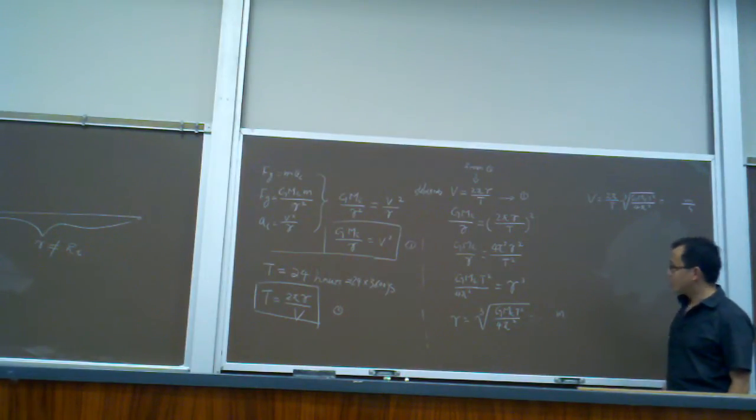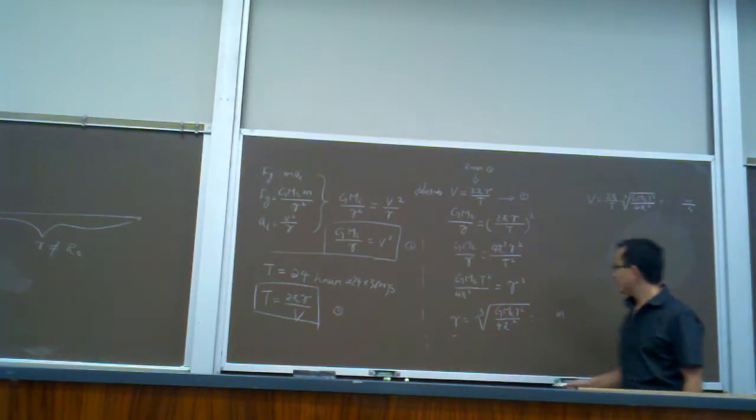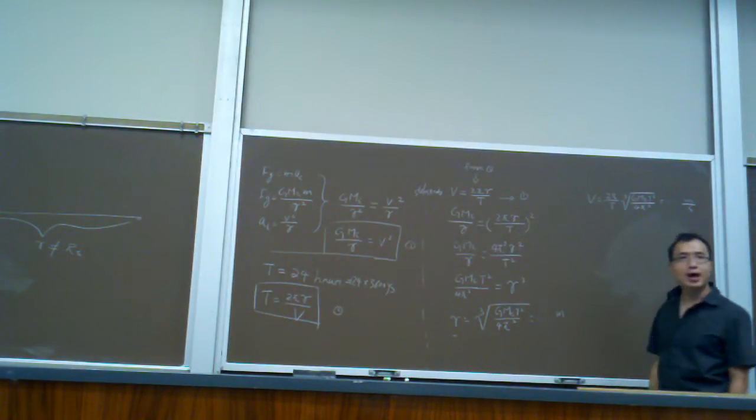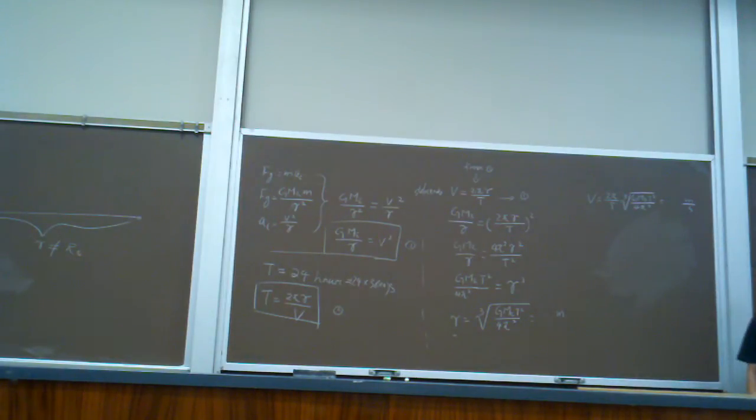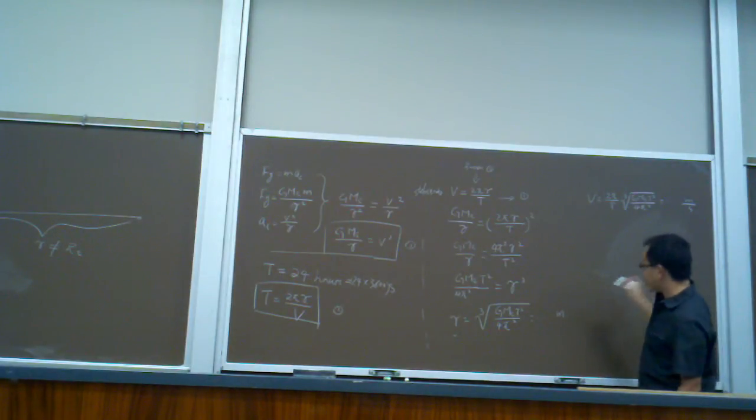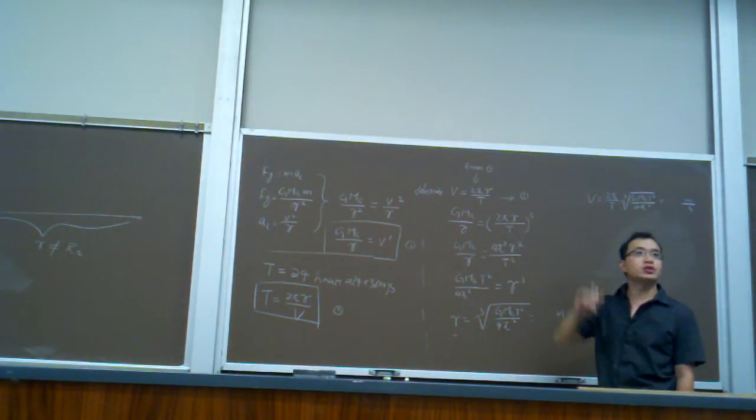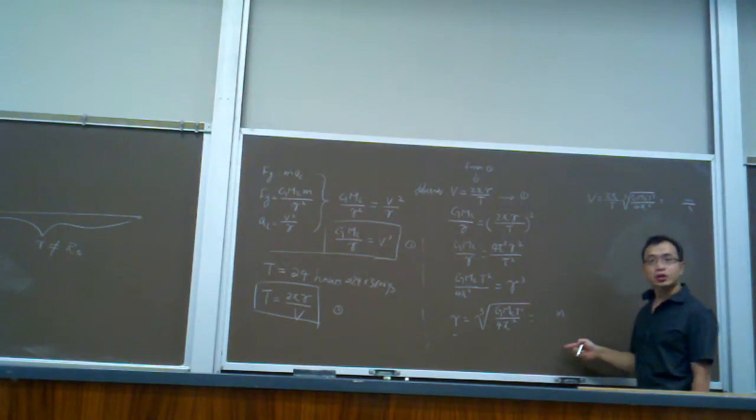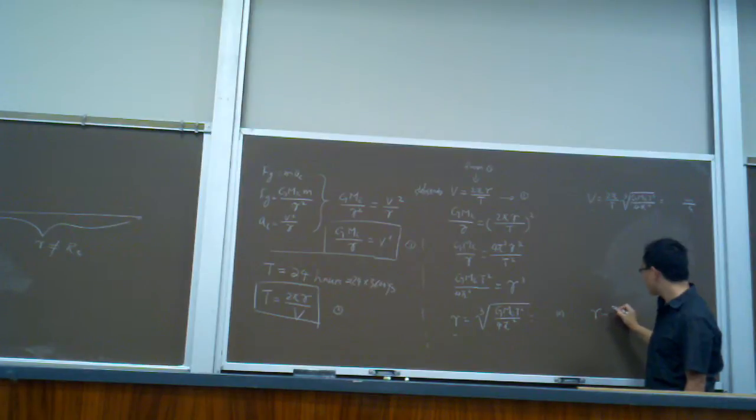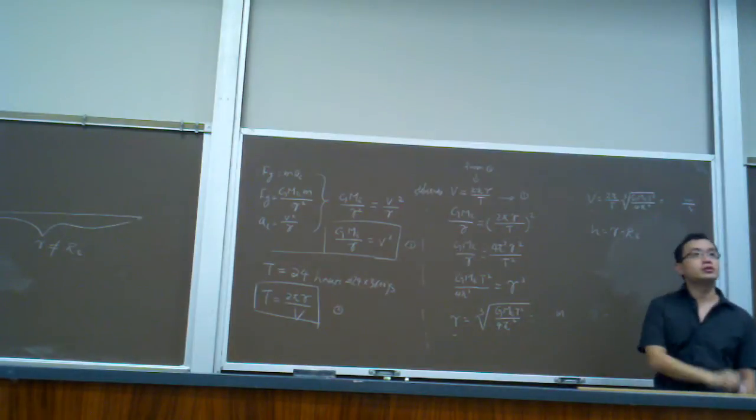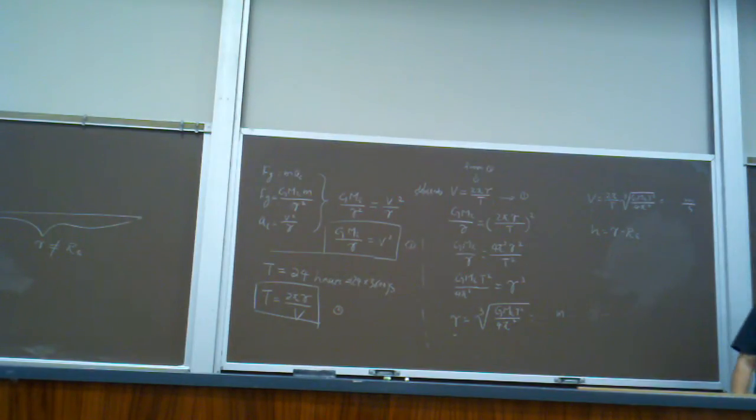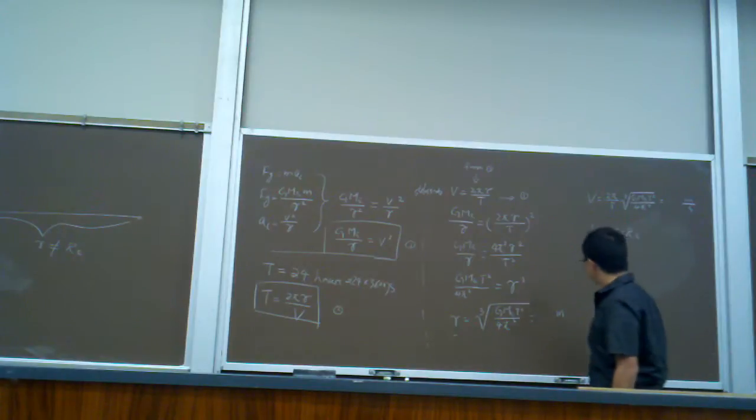So, this is the radius and the velocity. By the way, this is the radius. If you want to calculate the height or the altitude measured from the Earth's surface, what should we do? Subtract the radius of the Earth. Subtract the Earth's radius, RE. That's the problem.